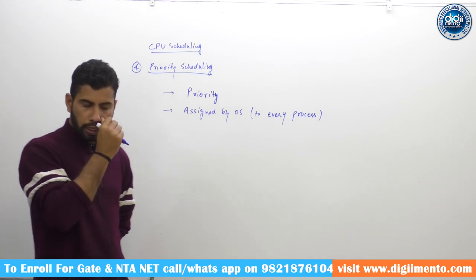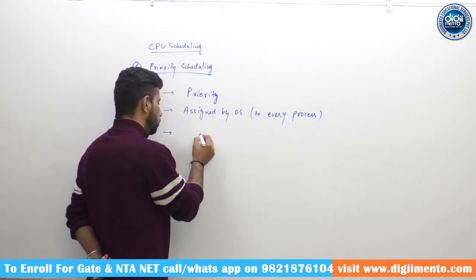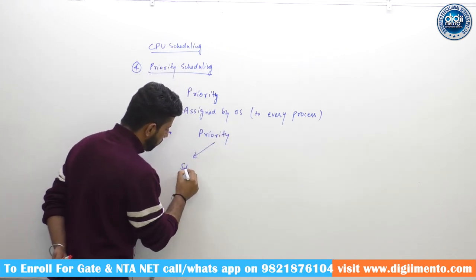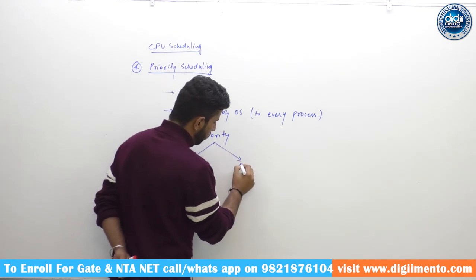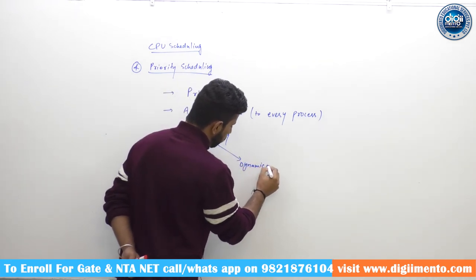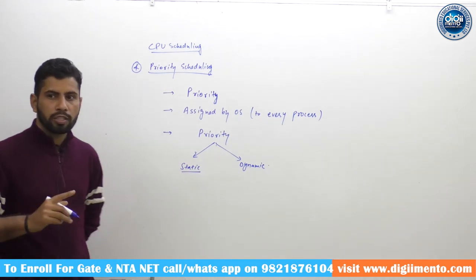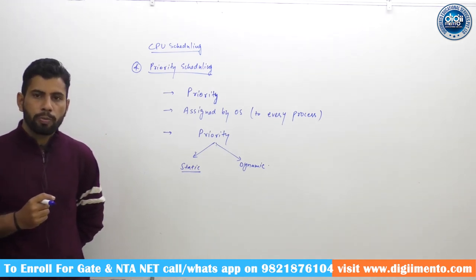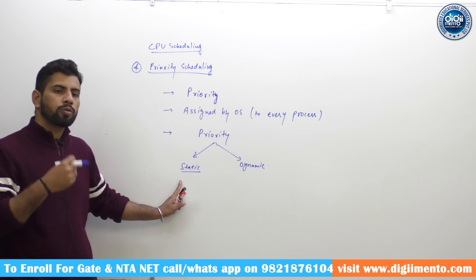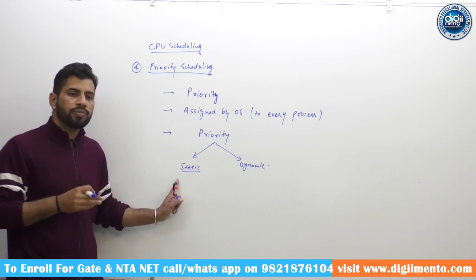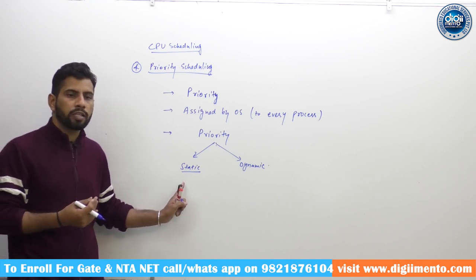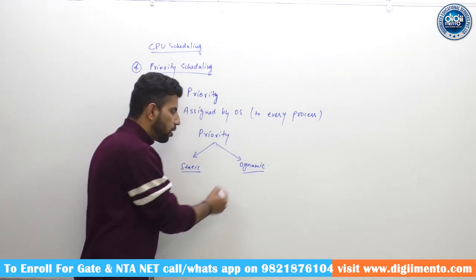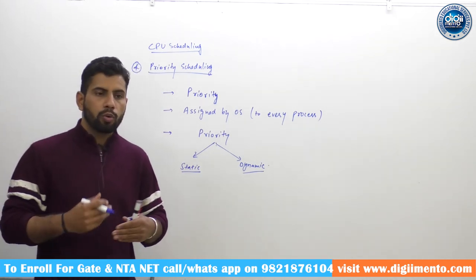Priority is generally of two types. First is static priority, and second is dynamic priority. Static priority does not change in the entire life of the process — as long as the process remains in the system, its priority stays static, meaning it does not change at all. But in dynamic priority, the priority changes according to time.